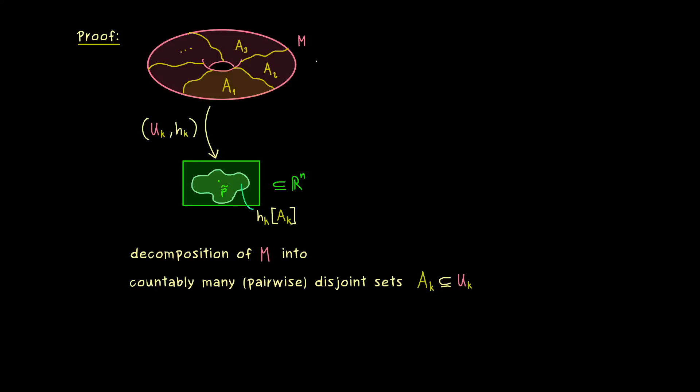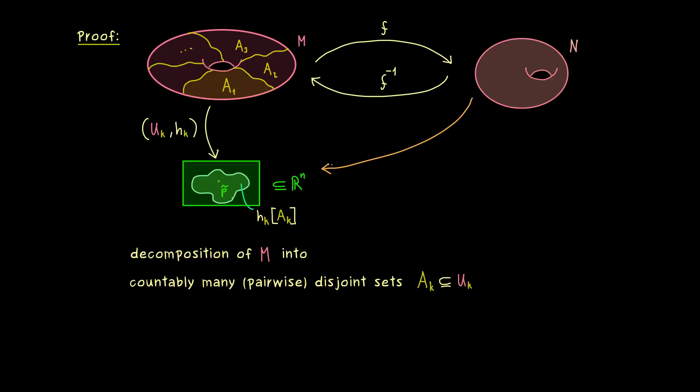However, now please don't forget, we also have our diffeomorphism f. This implies that we can translate everything one-to-one from M to N. Everything that works on the manifold M also has to work on the manifold N. This means we can immediately write down an atlas for N as well. And maybe let's keep the name simple, let's take (Vk, lk) for the atlas of N. And now obviously Vk is just the image of Uk under f, and lk is defined as a composition, namely first applying f inverse and then hk.